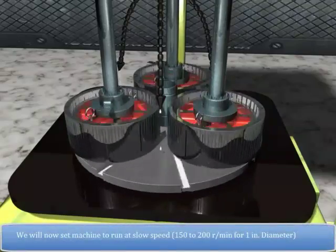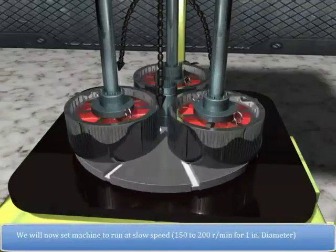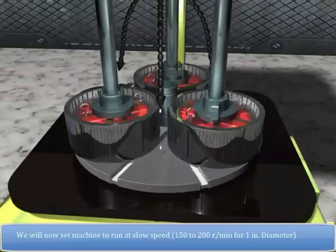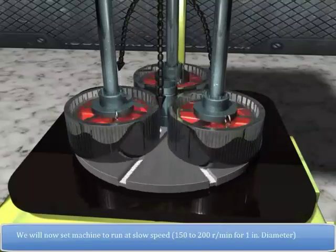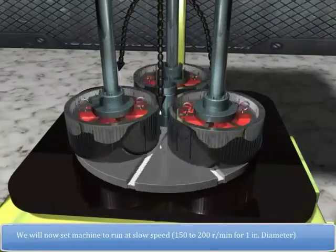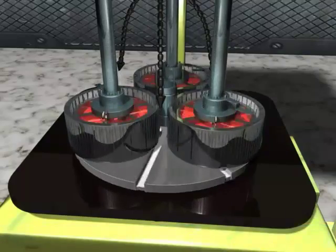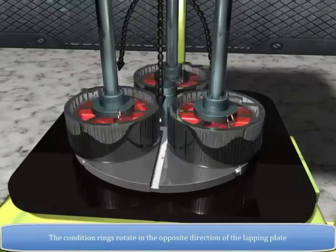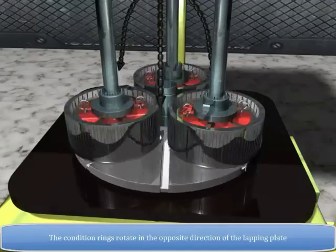We will now set the machine to run at slow speed of 150 to 200 rotations per minute for 1 inch diameter. The conditioning rings rotate in the opposite direction of the lapping plate.